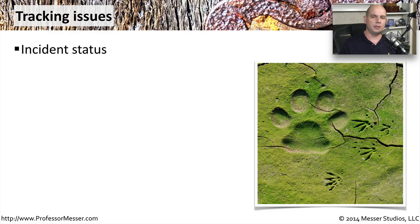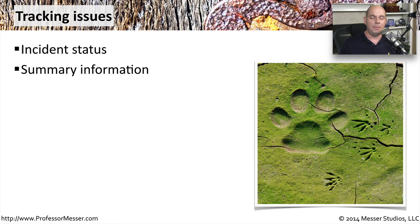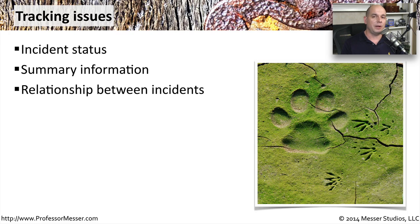When you're tracking information about the incident, there are a number of different items you may want to document. One is the status of the incident — you may want to keep an update as you go through the process of what was happening at any particular time. It may also be useful to have summary information so you can roll up larger amounts of data into a small description to communicate with others. It might also be useful to look at all the different incidents and see if there's any relationship or commonality between them.